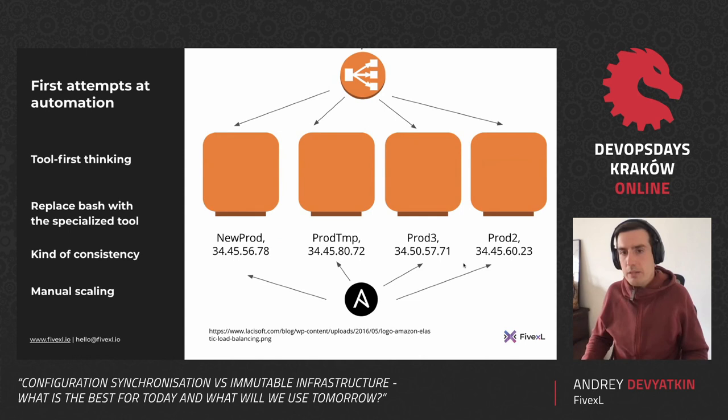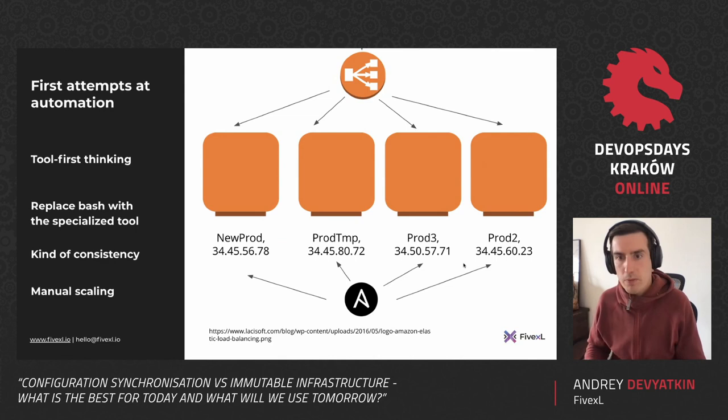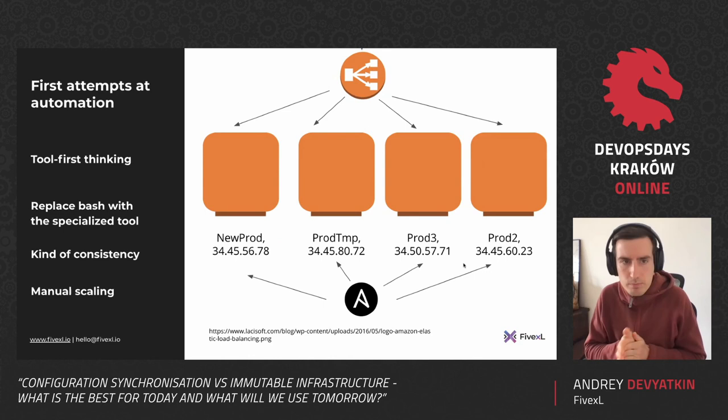When it gets too much to manage, they try to automate. They pick something that developers have heard of or used before. In our example, developers heard about Ansible and tried it before, so they're using Ansible to provision those servers, deploy updates, copy the code, and restart them. It's kind of consistent — not exactly, but it's getting there. It's better than before: more automated, takes less work. Scaling is still manual, but it might be good enough for the time being.